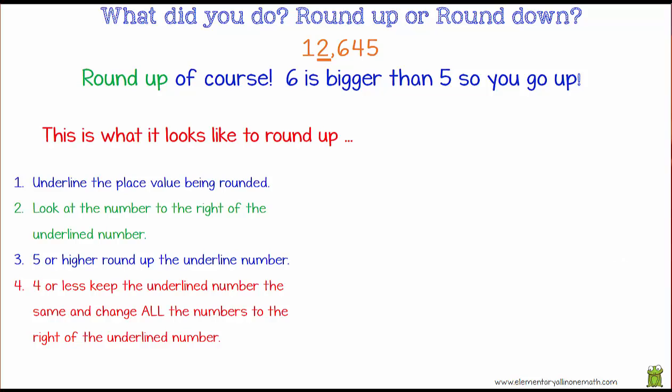So this is what it looks like to round up. Why don't we pick a number: 78,729 and we are going to round again to the nearest thousand.